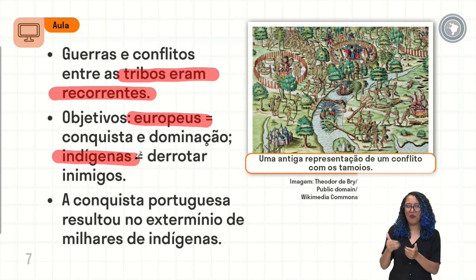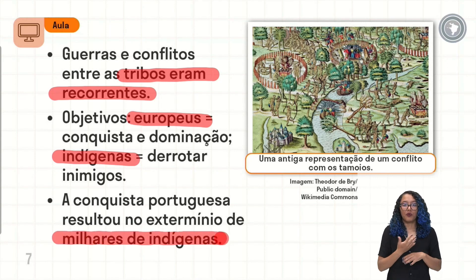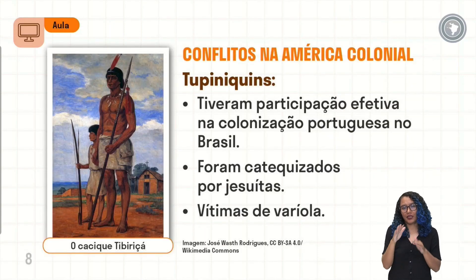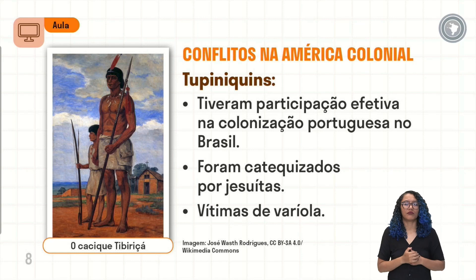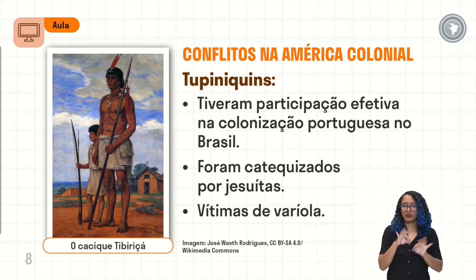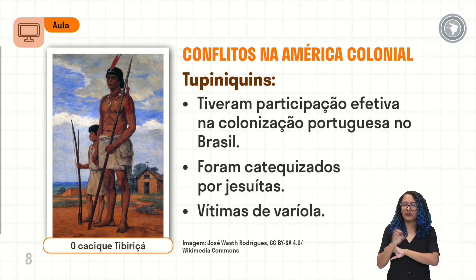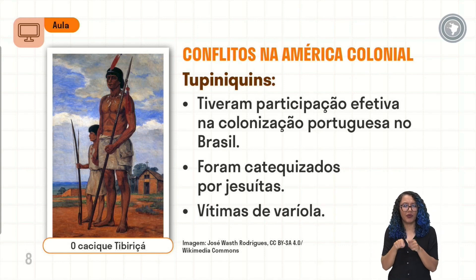A conquista portuguesa resultou no extermínio de milhares de indígenas. No contexto da América Portuguesa, essas alianças vão resultar também no extermínio dos indígenas. Em relação aos tupiniquins — conflitos na América Colonial — quem eram os tupiniquins? Também eram povos indígenas que habitavam o litoral sul do Brasil. Eles possuíam uma organização social complexa, eram habilidosos na arte da guerra e possuíam uma rica tradição oral. O momento de aliança entre eles e os europeus girava em torno de comércio, aculturação e mestiçagem.